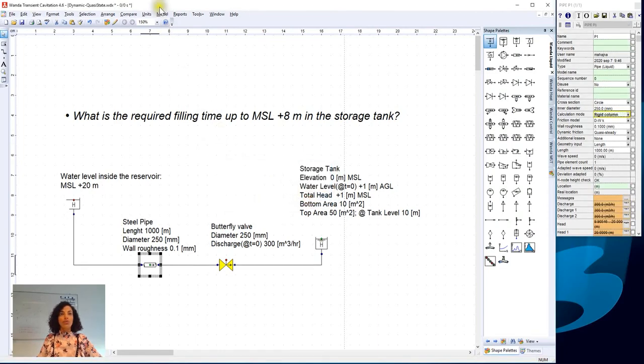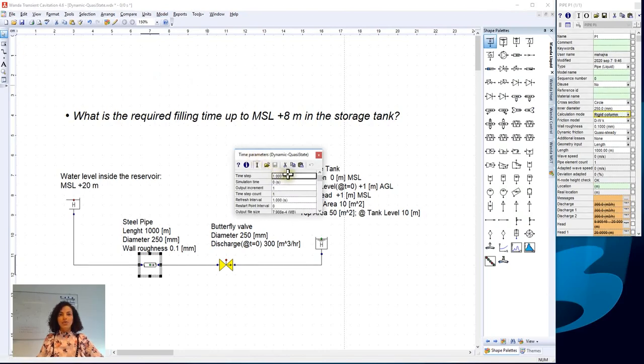So we go to Model and we go to time parameters window, and we choose a time step of 10 seconds and a simulation time of an hour which is 3600 seconds.